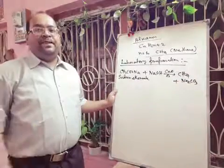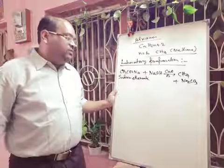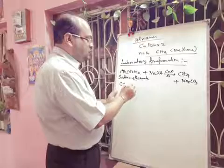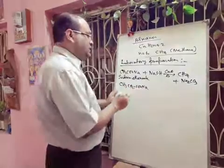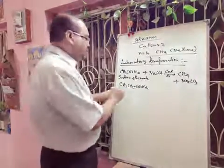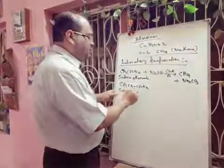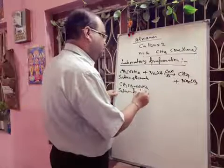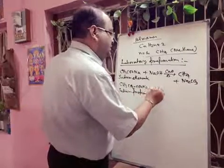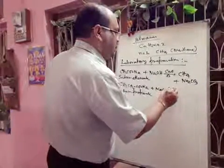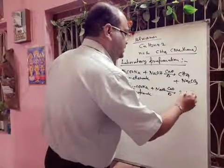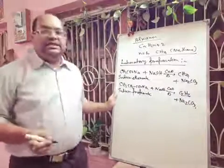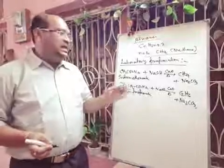If we want to prepare ethane gas, we take the sodium salt CH3CH2COONa — sodium propanoate. We add soda lime (sodium hydroxide and calcium oxide) and heat. Then we get C2H6 plus Na2CO3. In this way we can easily prepare methane and ethane.